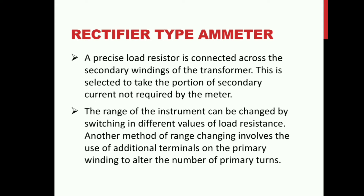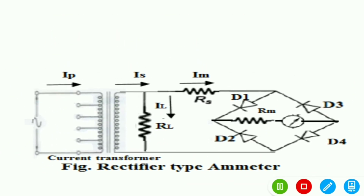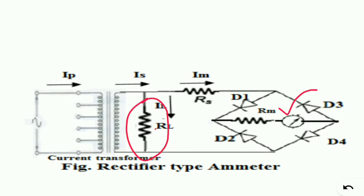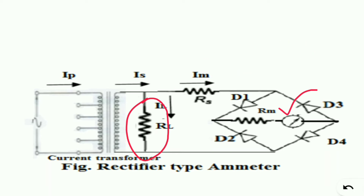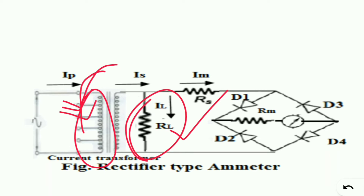The range of the instrument can be changed by switching in different values of load resistance. Another method of range changing involves the use of additional terminals on the primary windings to alter the number of primary turns. So we have two methods: we can change the resistance, or we can change the primary windings.